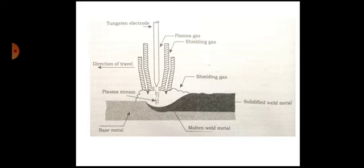This plasma gas moving out through the constricted nozzle reaches a very high temperature and helps initiate a welding arc between the electrode and the workpiece. Thus, the welding arc is produced.